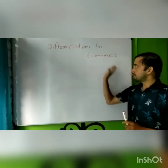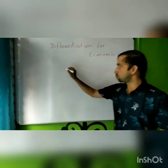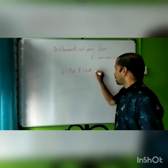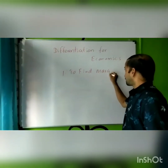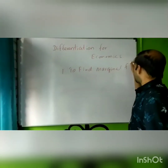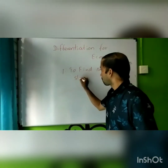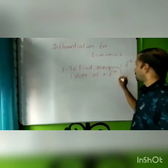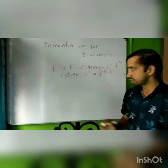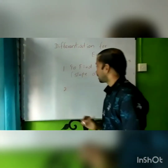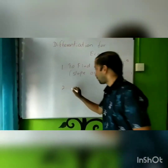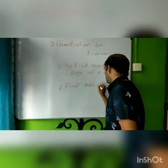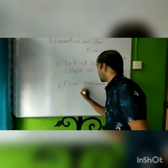Differentiation rules are used in economics for two main reasons. The first is to find the marginal function, or the slope of a function. The second is to use differentiation to find the value of a maximum point or minimum point.